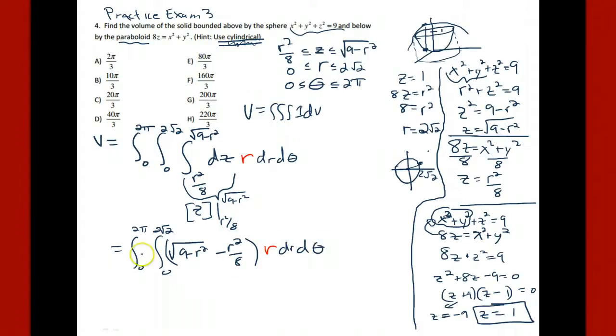And what we notice is that because this is evaluated at all these numerical limits of integration here, and the integrand is all in terms of r, what we can do is just separate these. We can have it as the integral from 0 to 2 pi, d theta. And we multiply that then by the integral from 0 to 2 root 2. We have r root 9 minus r squared minus r cubed over 8. And this is the last mystery for us. This guy is just going to be 2 pi. So the last thing that we have to encounter is how to integrate this.